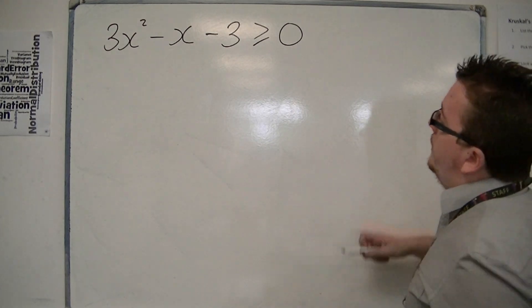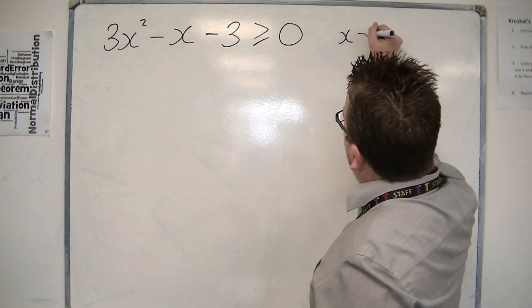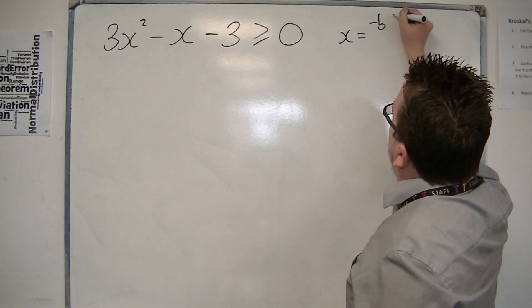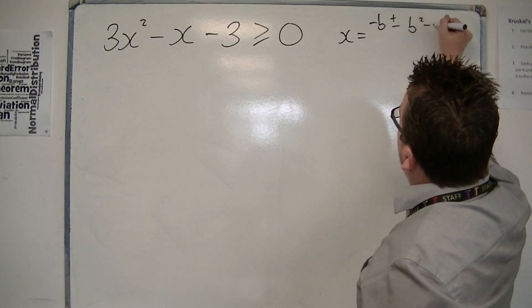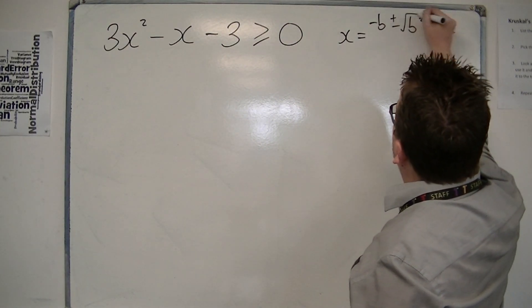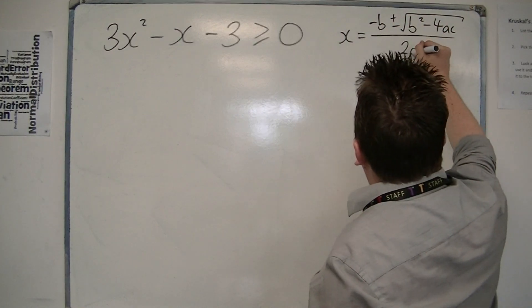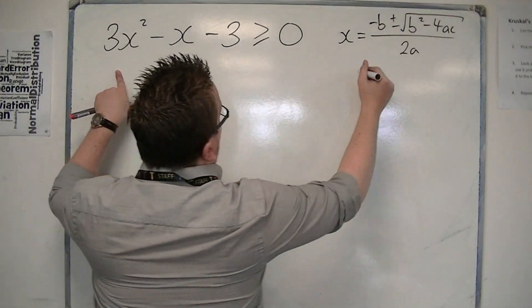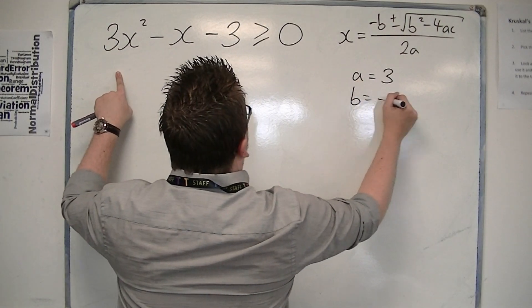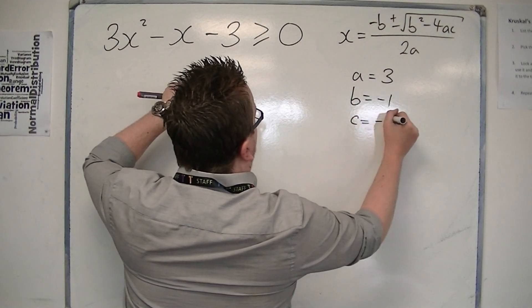Now, remember the quadratic formula? I keep going on about it. x is equal to minus b plus or minus the square root of b squared minus 4ac all over 2a. And in this case, we have a is 3, b is minus 1, and c is minus 3.